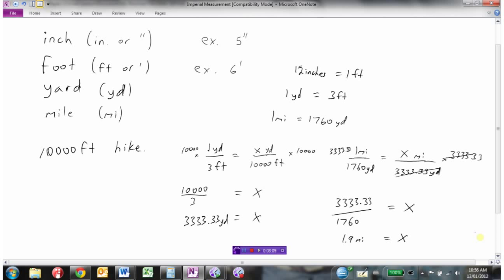So we now know that 10,000 feet, if that was how long their hike was, then in miles it would be about 1.9 miles. And that's the imperial system, and that's how we can simply use ratios to convert one unit to another.